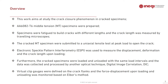This work focuses on the study of the crack closure phenomena in cracked specimens. MT specimens made of aluminium alloy A6082-T6 were prepared and fatigued in order to build cracks with different lengths. The crack length was measured by a travelling microscope with fatigue cycling tests. The cracked specimens were submitted to a uniaxial tensile test at peak load to open the crack, and ESPI was used to measure the displacement and consequently the deformation and crack length upon loading. Additionally, cracked specimens were loaded and unloaded with the same load intervals, with data collected and processed by Digital Image Correlation.